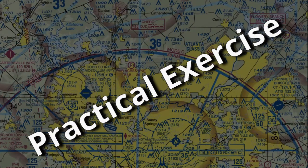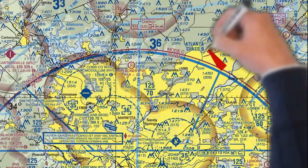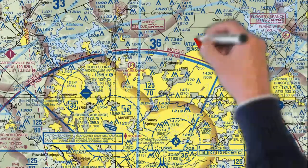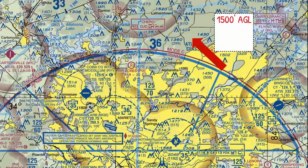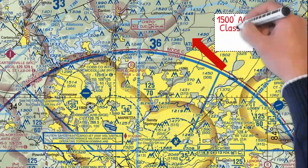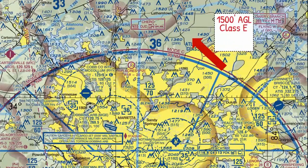Now let's do some quick practical exercises. If you're flying just north of Atlanta right here at 1,500 feet AGL, do you need ADS-B? First, what type of airspace are you in? Correct — Class E. If you're in Class E below 10,000 feet or below 2,500 feet AGL, it's not required.